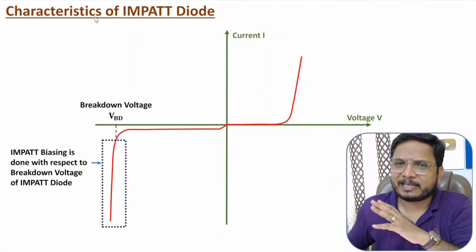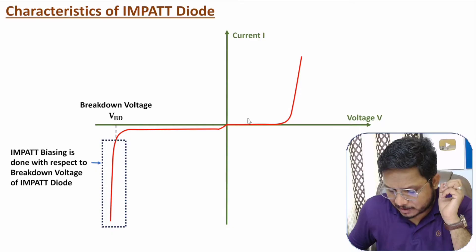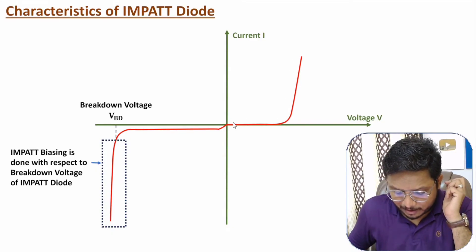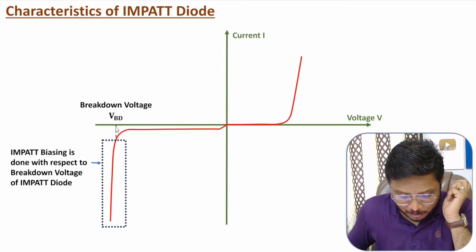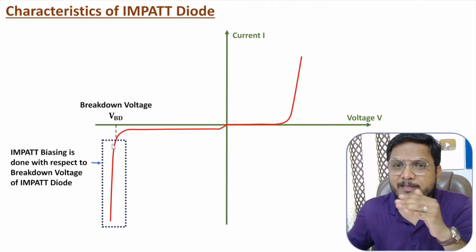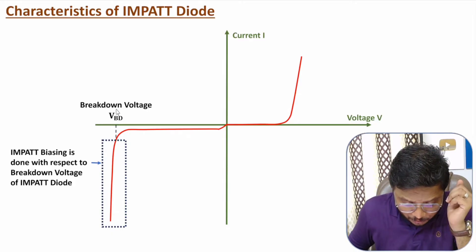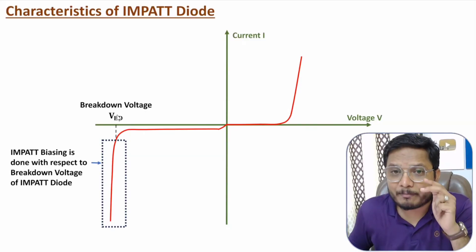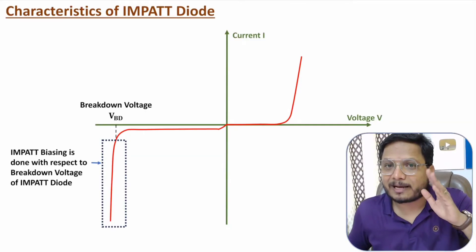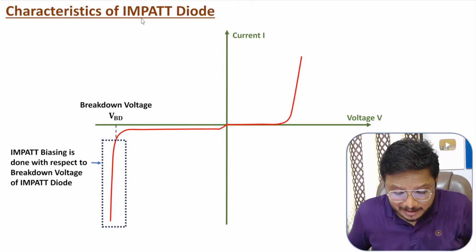The characteristics are the usual p-n junction characteristics: in forward bias, after the cut-in voltage current flows; in reverse bias, minor current flows; but after breakdown, huge current flows due to avalanche effect — charge carrier multiplication. IMPATT diode biasing is done in reverse bias with reference to breakdown voltage, operating on the verge of breakdown.